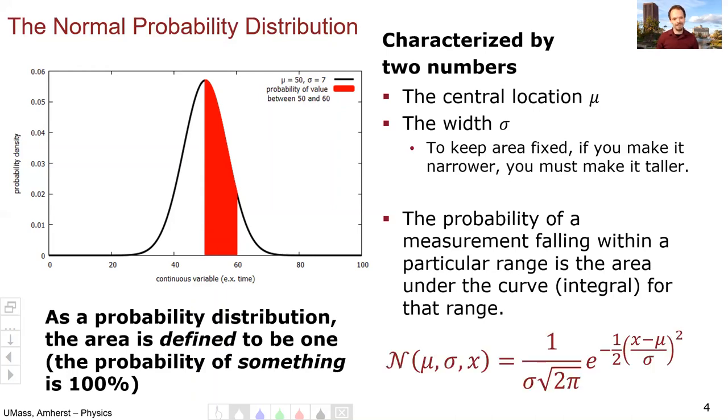The formula for this black curve is kind of ugly. You can see it depends upon mu, the central location, sigma the width, and then x is our variable on the horizontal axis, the continuous variable in this case, and this is a big ugly formula. The thing out front, the 1 over sigma square root 2 pi, ensures that the area underneath is in fact equal to 1.